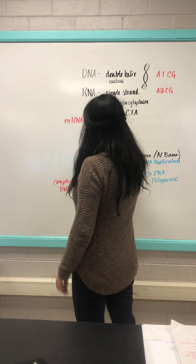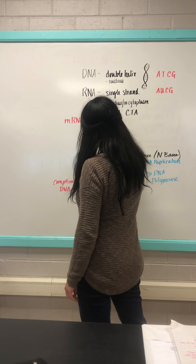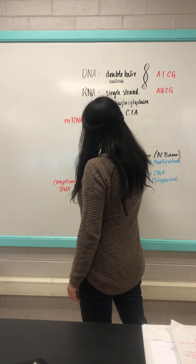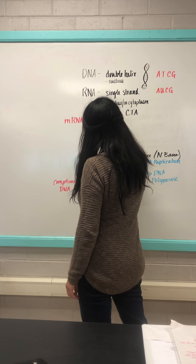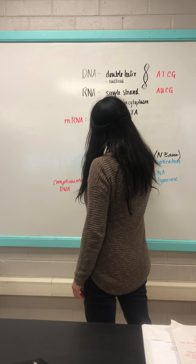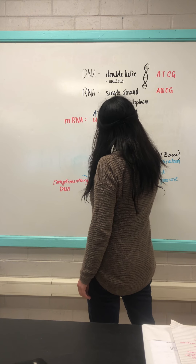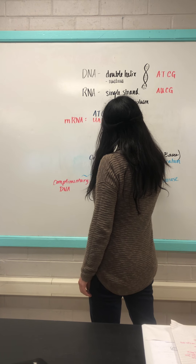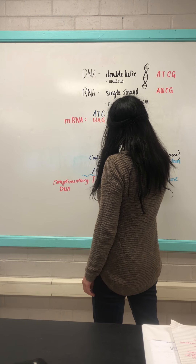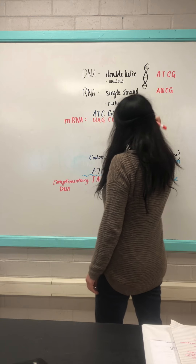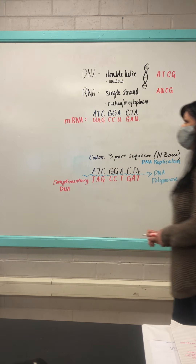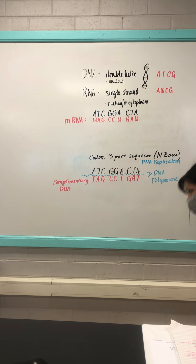Working through the mRNA strand from our DNA template: A bonds with U, T bonds with A, C bonds with G, G bonds with C, A bonds with U, C bonds with G, T bonds with A, and A bonds with U. That's your messenger RNA — it got the message from the DNA and put it into RNA code.